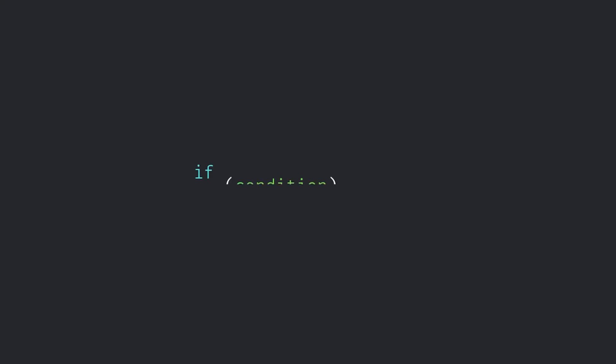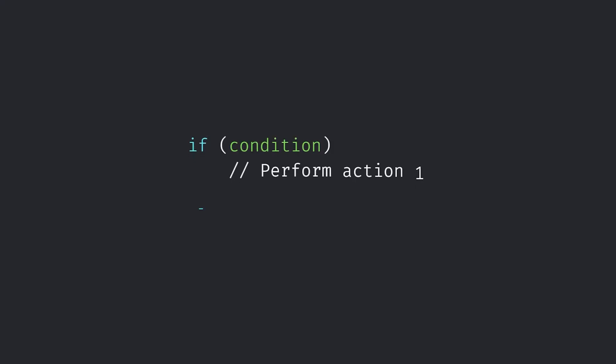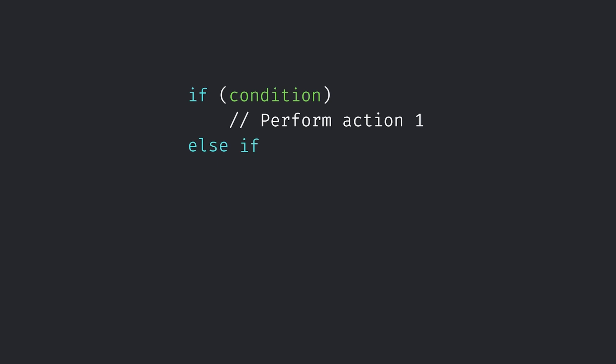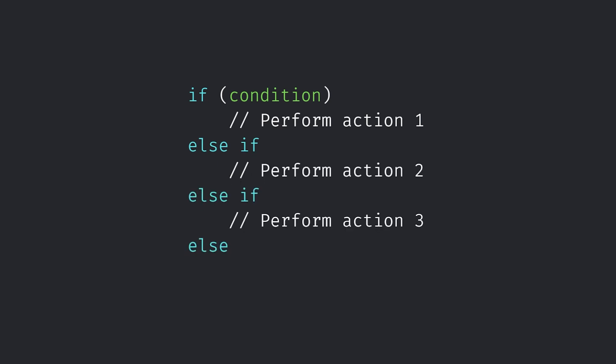In week three we're introduced to conditional statements. As they sound, conditional statements are essentially instructions that only get performed if a condition is true. In programming, we often use the structure: if a certain condition, perform a set of actions. We then expand on this by looking at if-else statements — if a certain condition is true perform this action, otherwise else perform this action. These can be expanded out with else-ifs which provide extra options if the first condition isn't true.